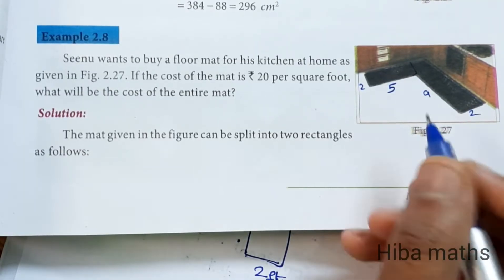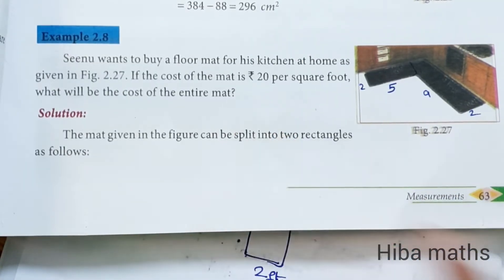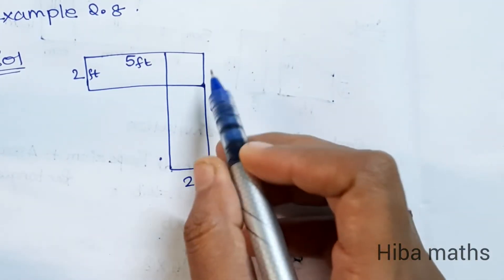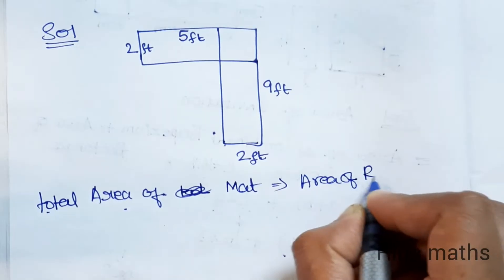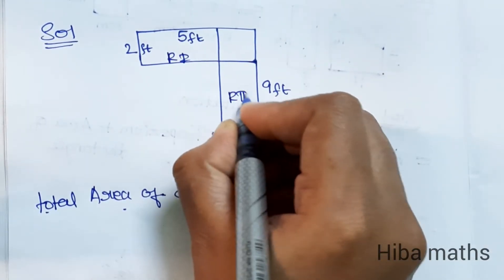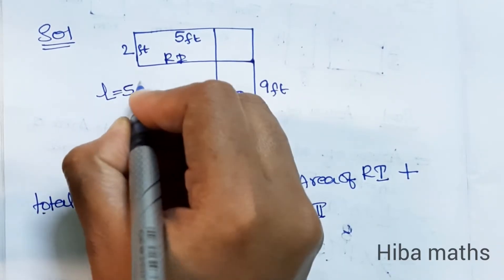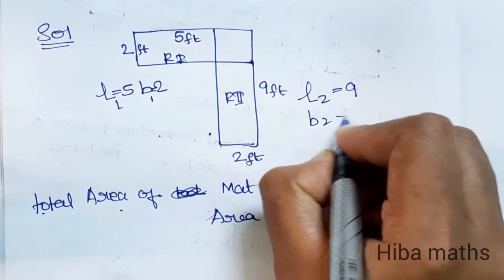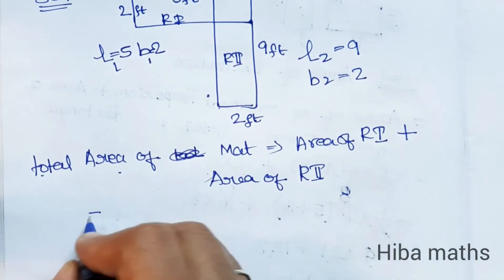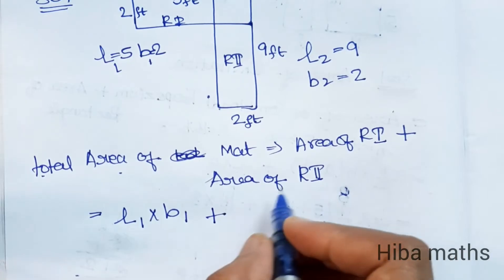If we want to buy a mat, first we need to find the total area of the mat. Area of Rectangle 1 (R1) plus area of Rectangle 2 (R2). For R1: length L1 is 5, breadth B1 is 2. For R2: length L2 is 9, breadth B2 is 2. The formula for area of a rectangle is length into breadth.